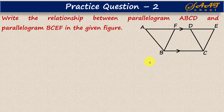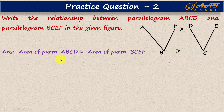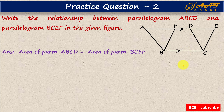Here is Practice Question 2, again based on Theorem 1. We have to show the relation between parallelogram ABCD and parallelogram BCEF. These two parallelograms have the same base BC and are standing between the same parallel lines. Therefore, area of parallelogram ABCD equals area of parallelogram BCEF, because they are standing on the same base and between the same parallel lines. Remember: two parallelograms on the same base between two parallel lines are equal in area.